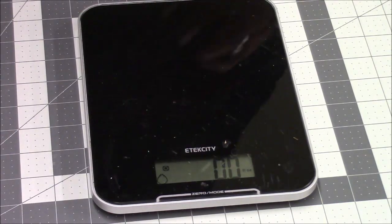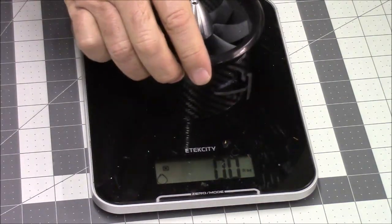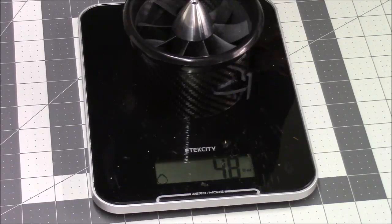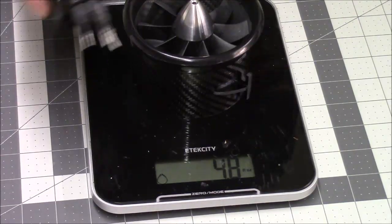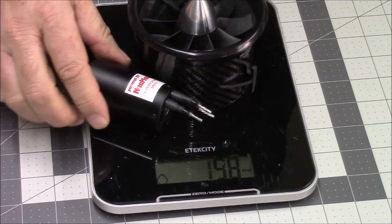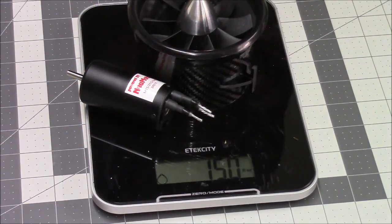Now the new system, so with the fan housing and fan, we're looking at 4.8 ounces. For the new motor, let's put that in there real careful. That takes us up to 15 ounces even.